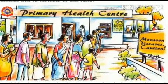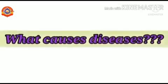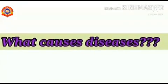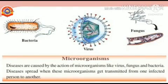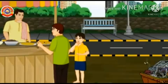Have you ever been unable to carry out your pre-planned programs due to diseases? What could be the reason for the increase of diseases during the rainy season? You have studied earlier that mosquitoes, houseflies, rats, etc. transmit diseases — but what causes diseases? Diseases are caused by the action of microorganisms like viruses, fungi, and bacteria. Diseases spread when these microorganisms get transmitted from one infected person to another.